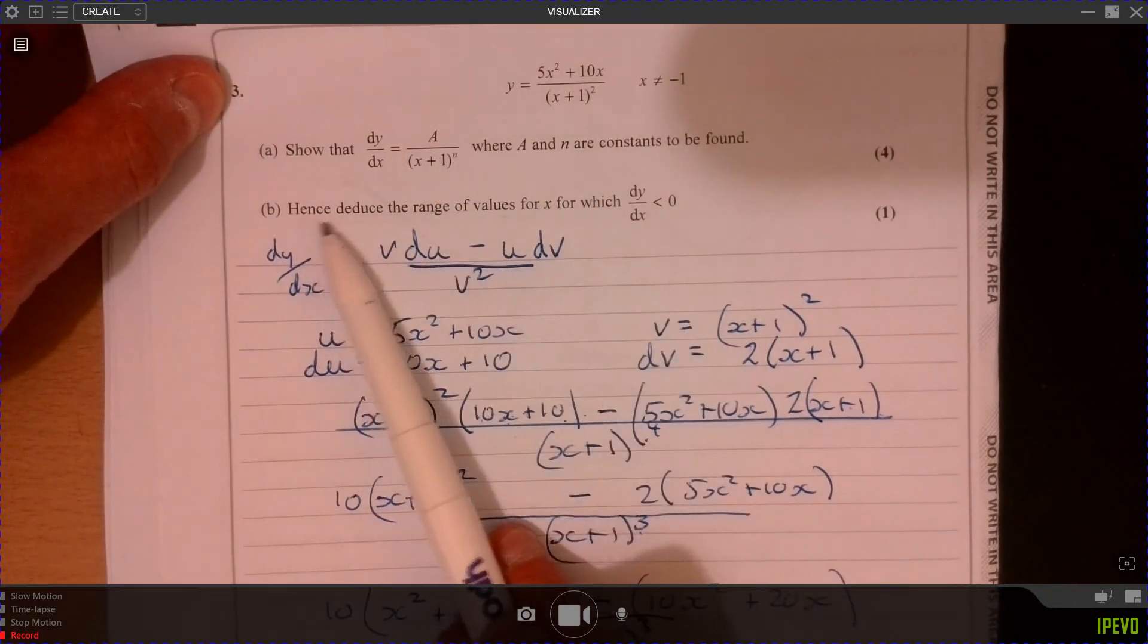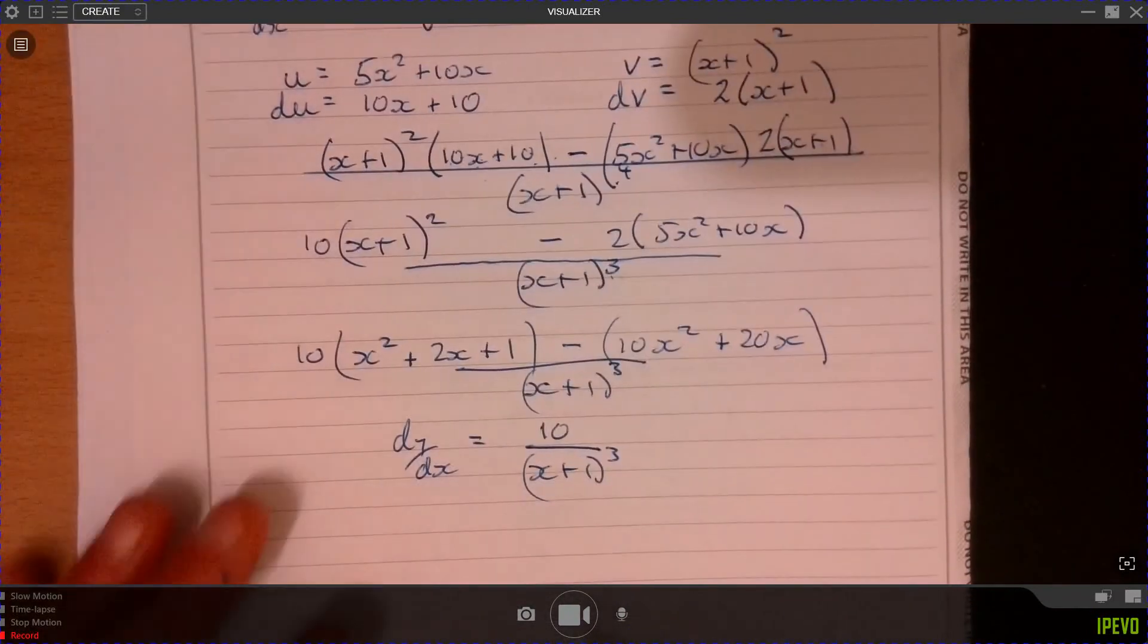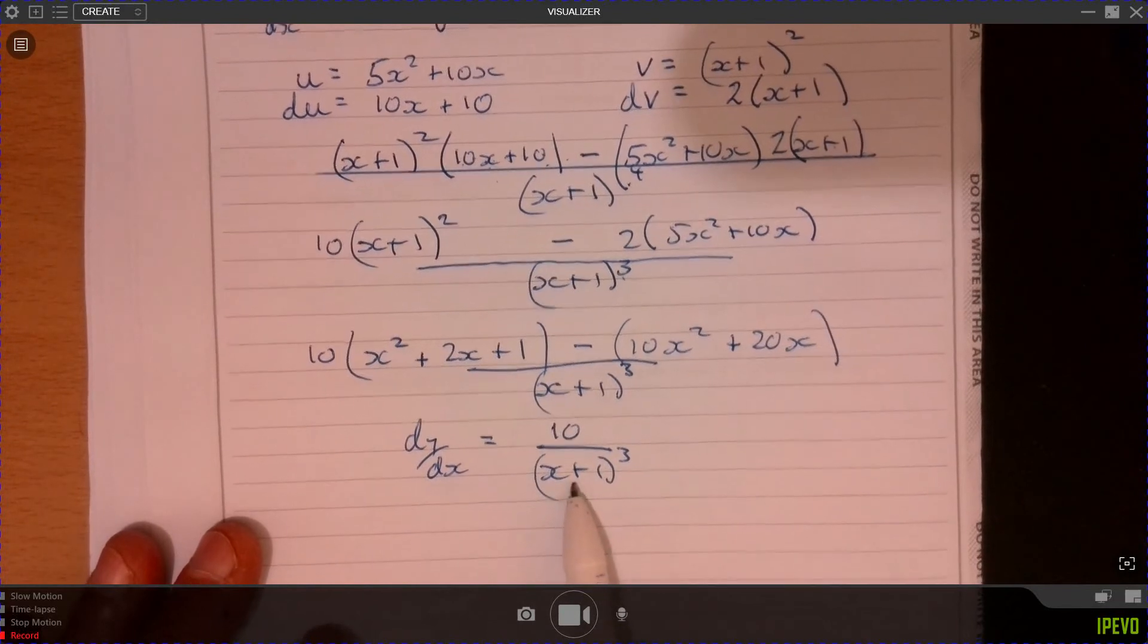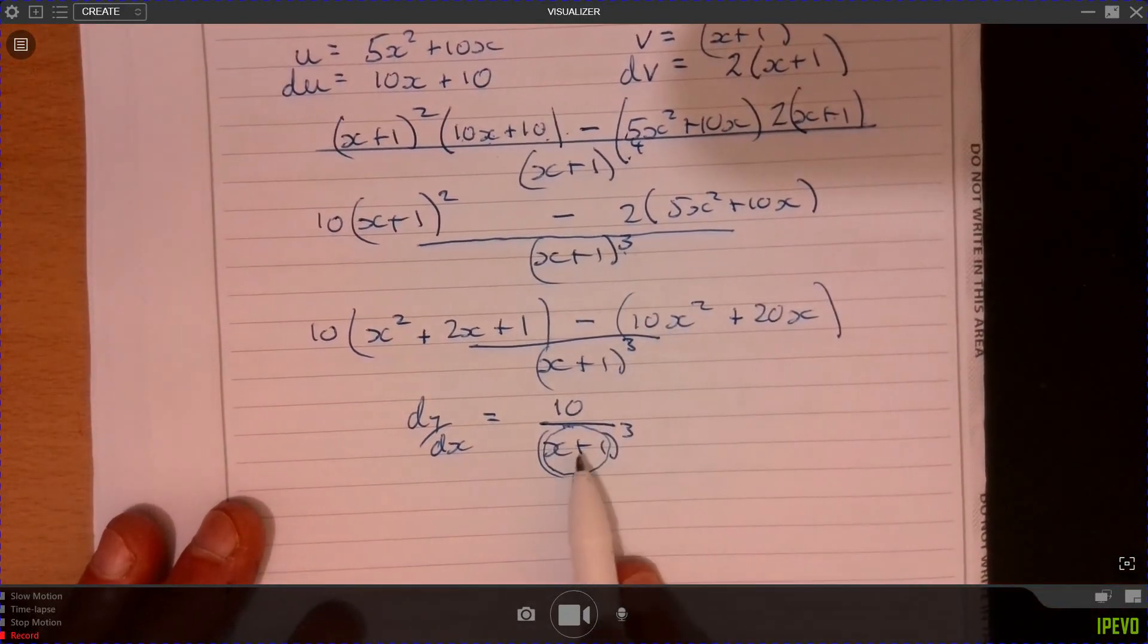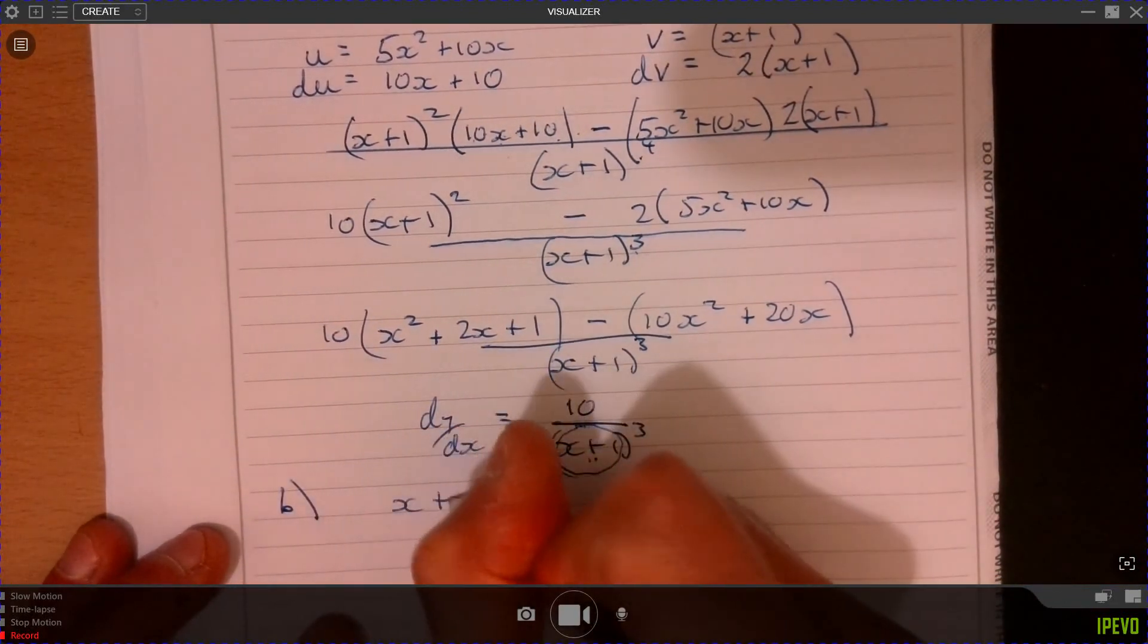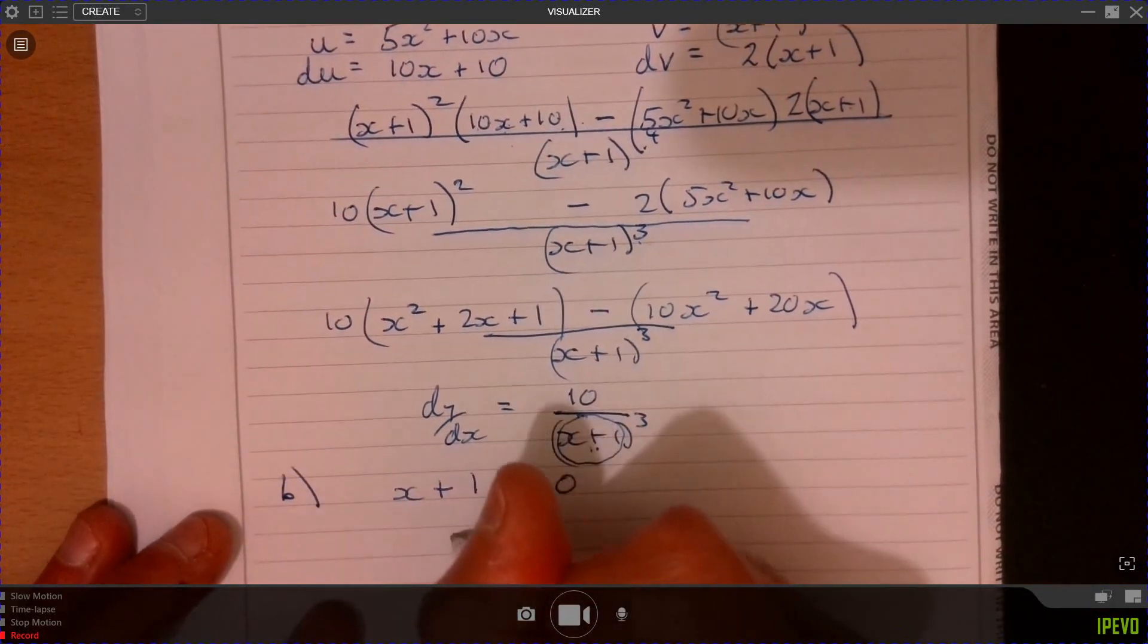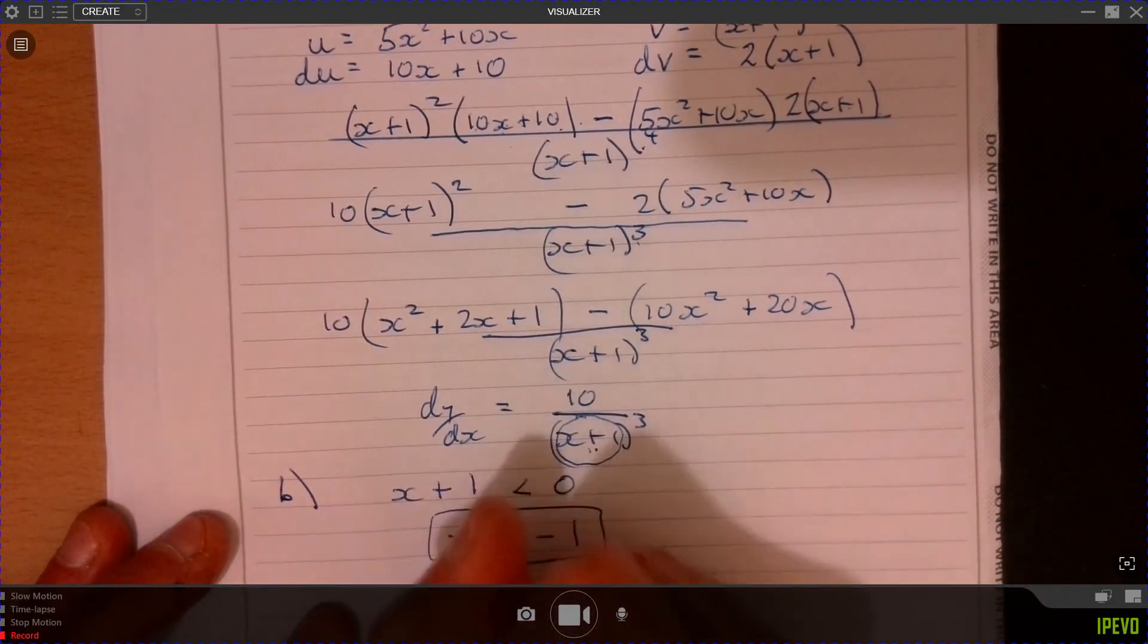Now, on part B, it says, hence, deduce the range of values of x for when this can be less than 0, when dy over dx is less than 0. In other words, it's negative. Well, what would make it negative? It would be negative when this bit here is going to be negative. That's the only way we can get negative, because you've got 10 on the top. So on part B, it's when this part is going to be less than 0. So when x plus 1 has to be less than 0, take away 1 from both sides. So in other words, x has to be less than minus 1. Hurrah!